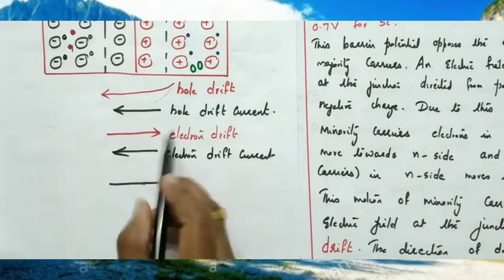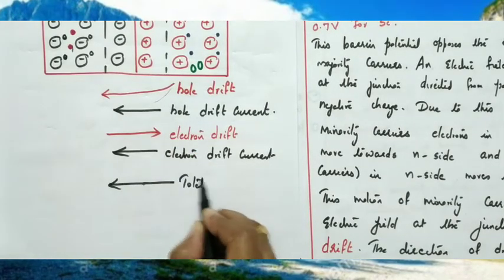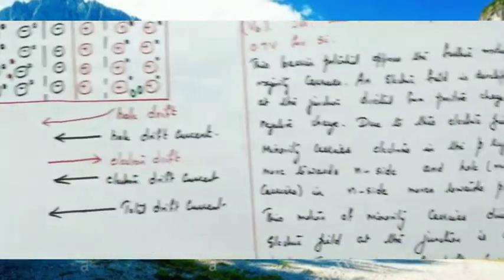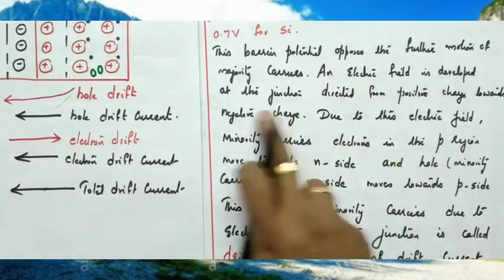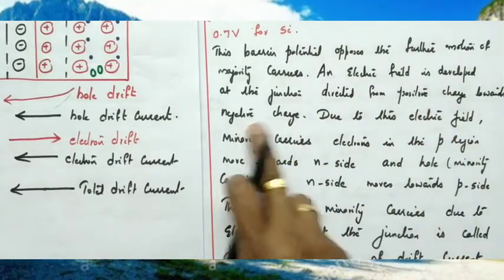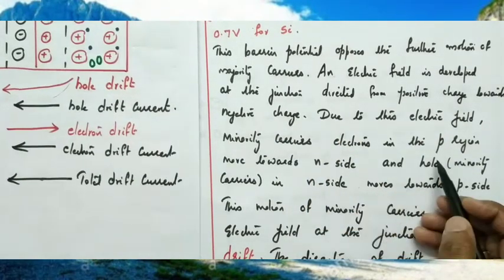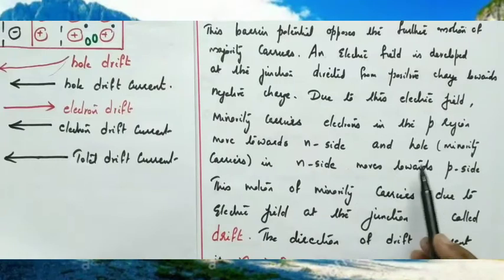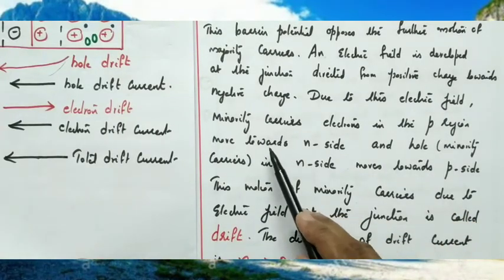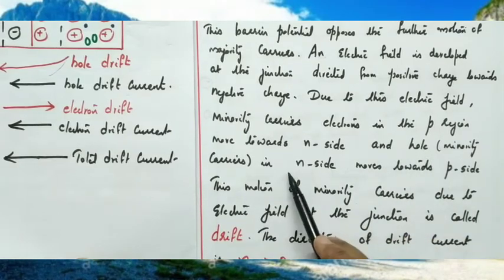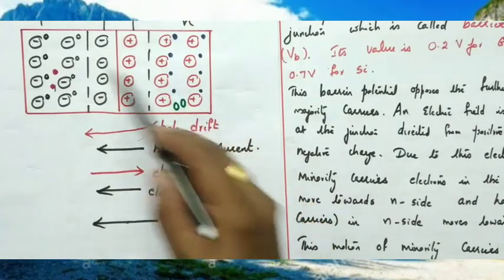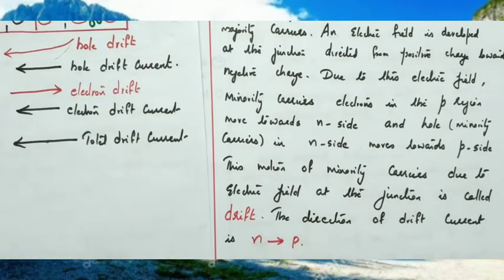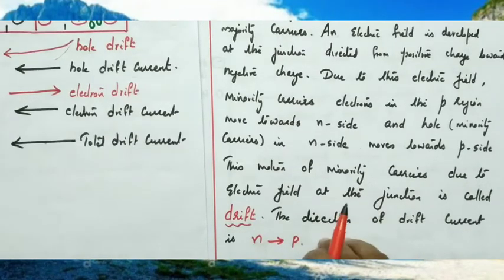The total drift current is therefore from N to P. Due to the electric field at the junction — directed from the positive charge region towards the negative charge region — minority carrier electrons in the P region move from P to N, and minority carrier holes in the N region move towards the P side. This motion of minority carriers due to the electric field at the junction is called drift.